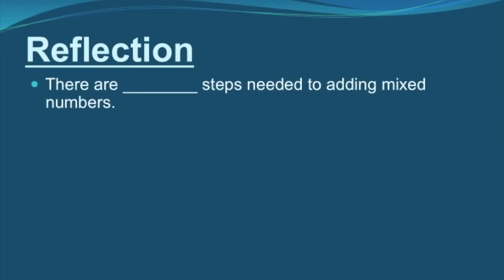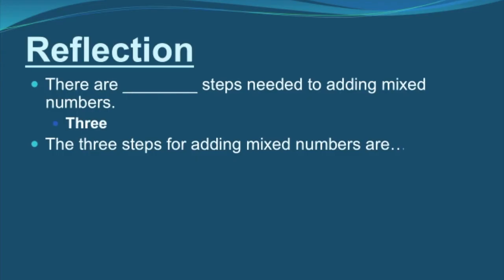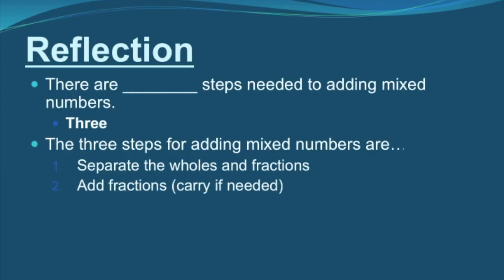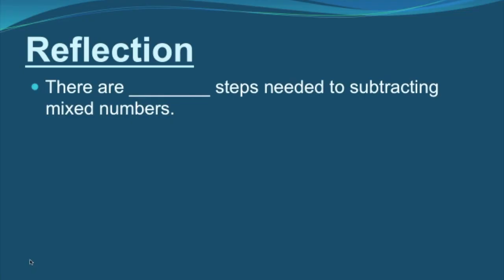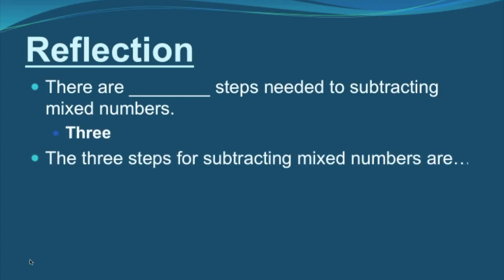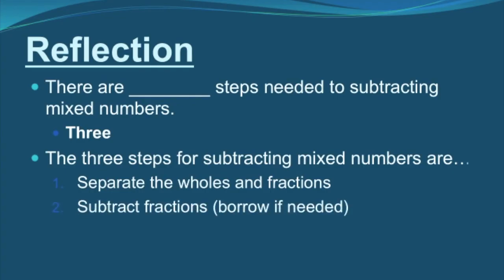A brief reflection. There are three steps needed for adding mixed numbers: one, separate the wholes and fractions; two, add fractions and carry if needed; and three, add the wholes. When subtracting mixed numbers, if there is not enough to subtract from in the top fraction, you must borrow from the wholes — not just put a one in front of the number. The three steps for subtracting mixed numbers are: one, separate the wholes and fractions; two, subtract fractions and borrow if needed and only if needed; and three, subtract the wholes.